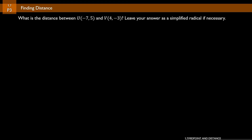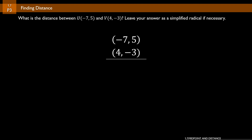In problem number 3, we find distance using the quick method. What is the distance between U(-7, 5) and V(4, -3)? Leave your answer as a simplified radical if necessary. Stack the pairs: negative 7, 5 over 4, negative 3. Distance between negative 7 and 4 is 11. Distance between 5 and negative 3 is 8. Square both: 121 and 64. Add them: 185. Take the square root — the square root of 185 cannot be simplified, so that's the solution.